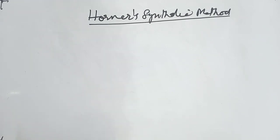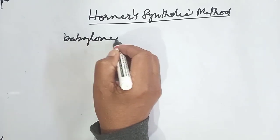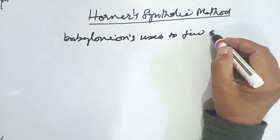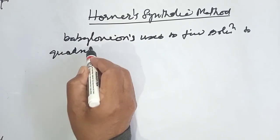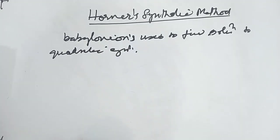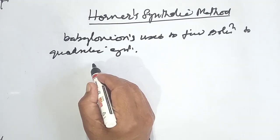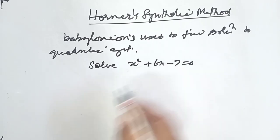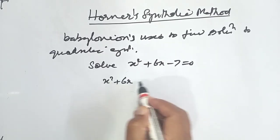First of all, we try to deal with the ancient method to solve quadratic equations — that is what the Babylonians used to find solutions to quadratic equations. We take one example: solve x² + 6x - 7 = 0. By the ancient method, we put the constant on one side: x² + 6x = 7.